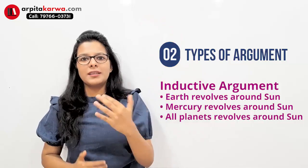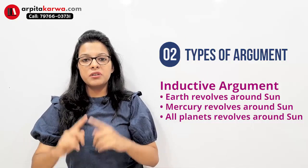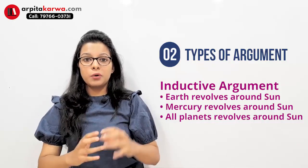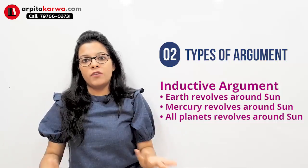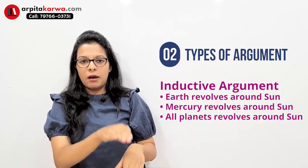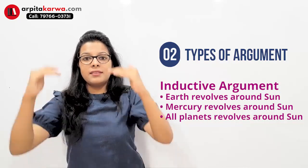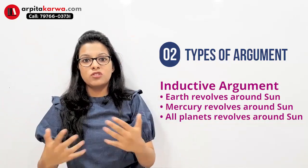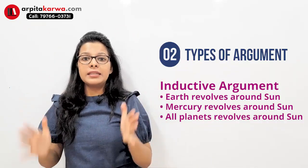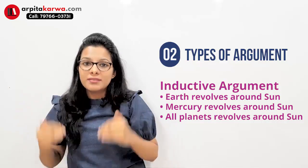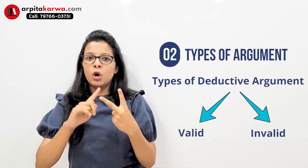An inductive argument moves from specific to general. For example, 'Earth revolves around the sun' and 'Mercury revolves around the sun.' Since I know that Earth and Mercury are planets, I can conclude that 'all planets revolve around the sun.' So we start from specific instances — Earth revolves around the sun, Mercury revolves around the sun — and move to a general notion: all planets revolve around the sun.